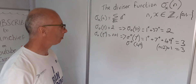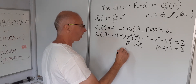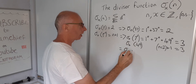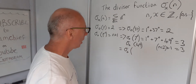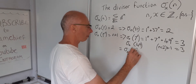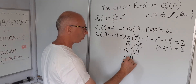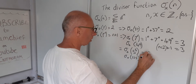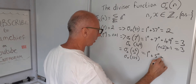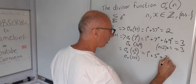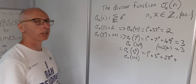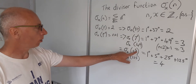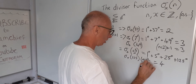Let's try another: sigma_0(5³) = sigma_0(125). The divisors of 125 are 1, 5, 25, and 125. Raising each to the power of 0 and summing them up gives 4. Since n equals 3, we confirm n+1 equals 4.